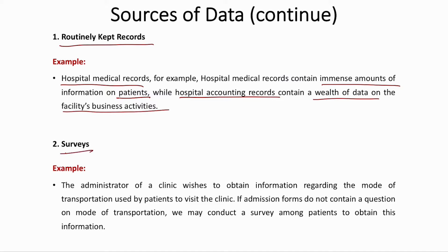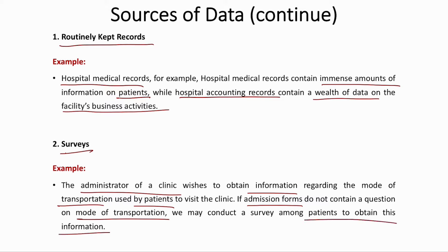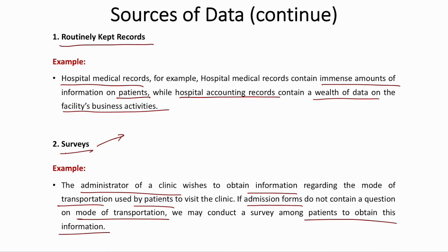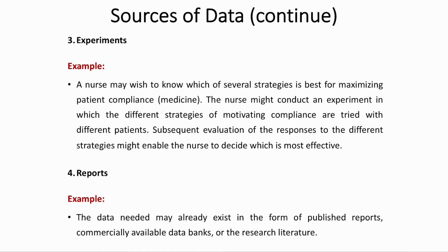The second source is surveys. For example, a clinic administrator may want to know the mode of transportation patients use to visit the clinic. If admission forms do not contain this question, a survey can be conducted among patients to obtain this information. Surveys are used when you do not have a particular piece of information and you ask people to provide answers.